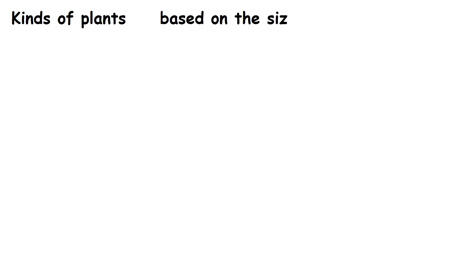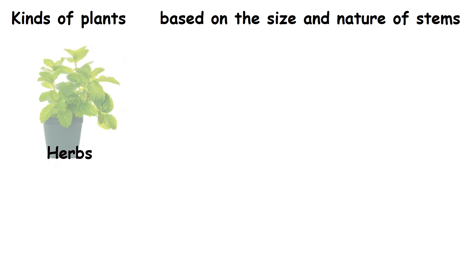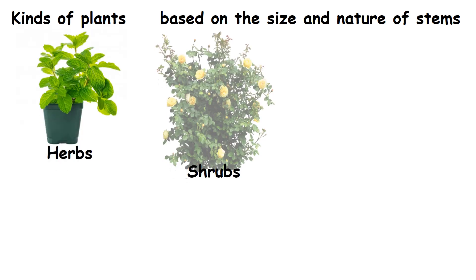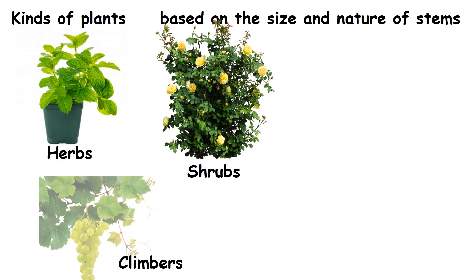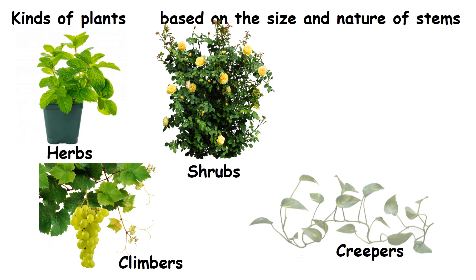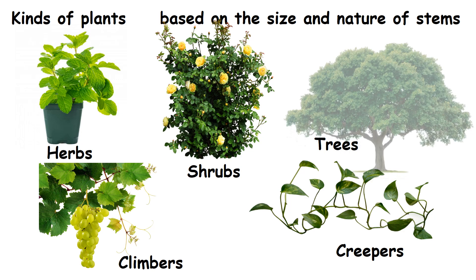Kinds of plants. Plants can be grouped based on the size and nature of their stems. They are classified into herbs, shrubs, climbers, creepers and trees.